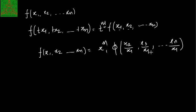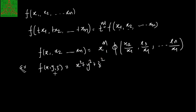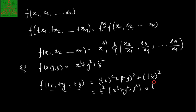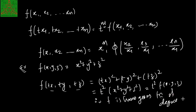For example, suppose the function given is f(x, y, z) = x² + y² + z². We start with f(tx, ty, tz): by substituting we get (tx)² + (ty)² + (tz)², and factoring out t² gives t²(x² + y² + z²) = t²·f(x, y, z). Hence we can say that f is a homogeneous function of degree 2 in variables x, y, z.